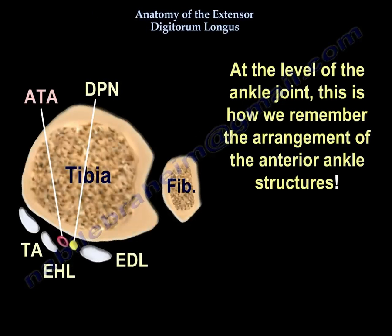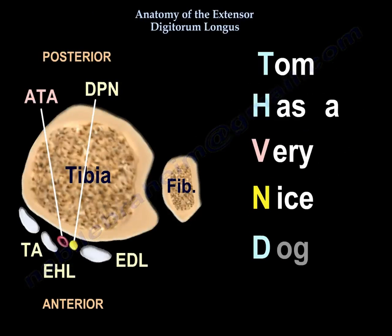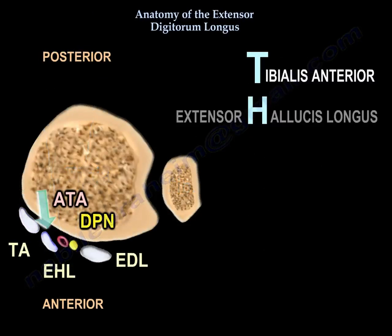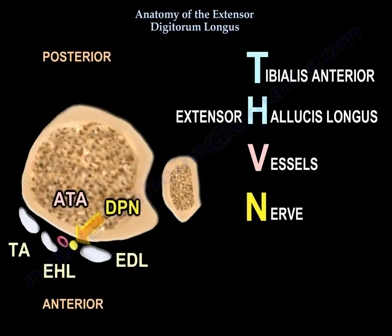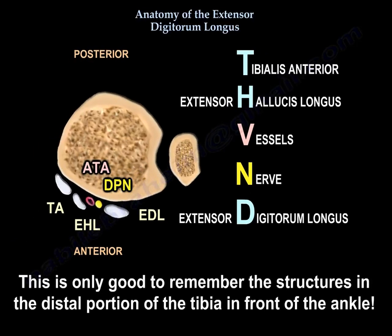At the level of the ankle joint, we remember the arrangement of the anterior ankle structures using the mnemonic: 'Tom Has A Very Nice Dog.' T for tibialis anterior, H for hallucis longus, A for the anterior tibial artery, V for vessels, N for nerve, and D for the extensor digitorum longus. This helps you remember the structures in the distal tibia in front of the ankle.